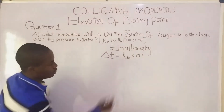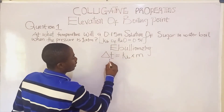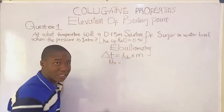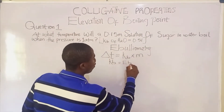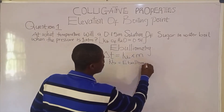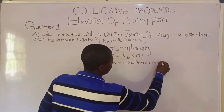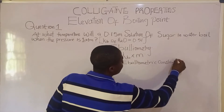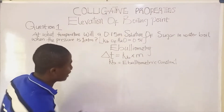Now, what is KB? KB is called the ebulliometric constant — it is a constant — also known as the molar boiling point elevation constant.